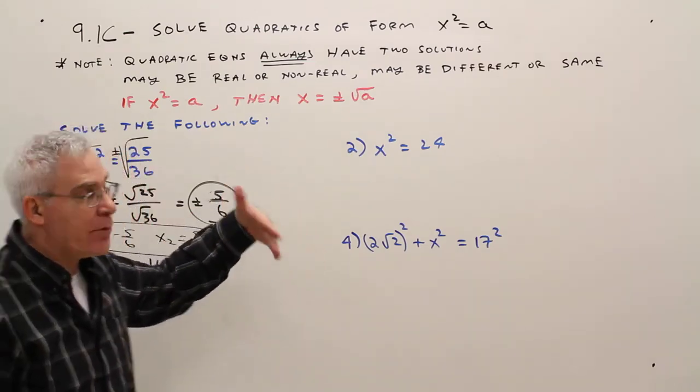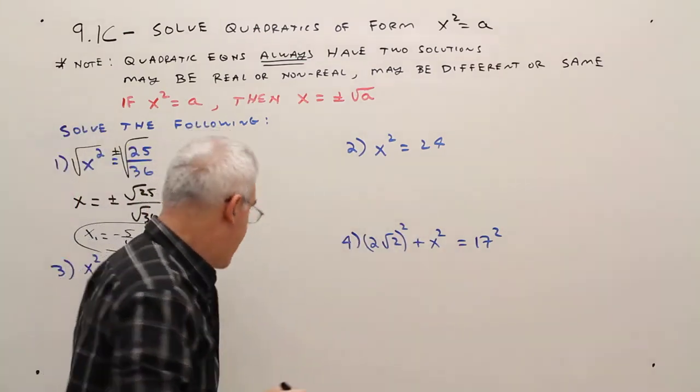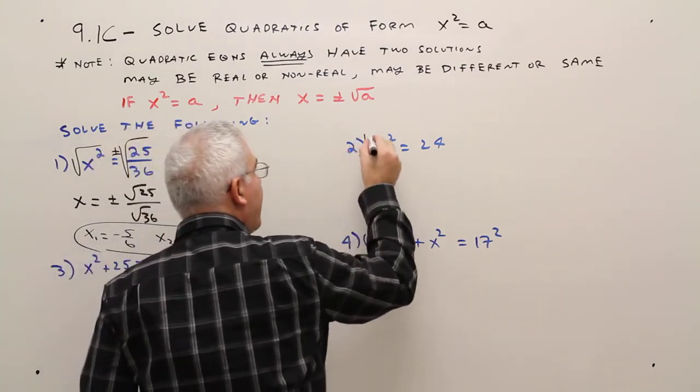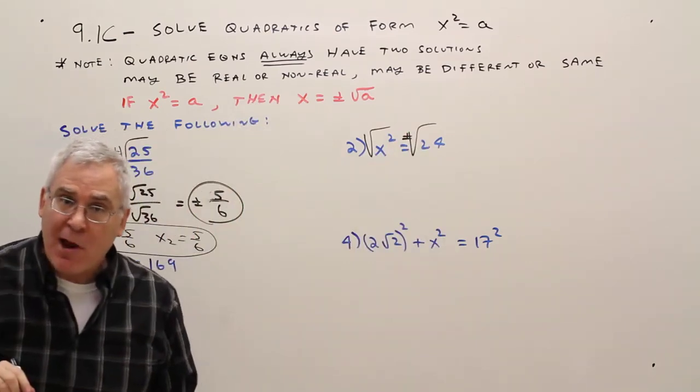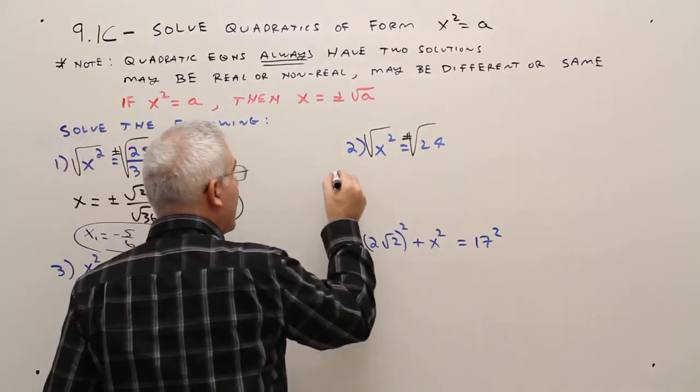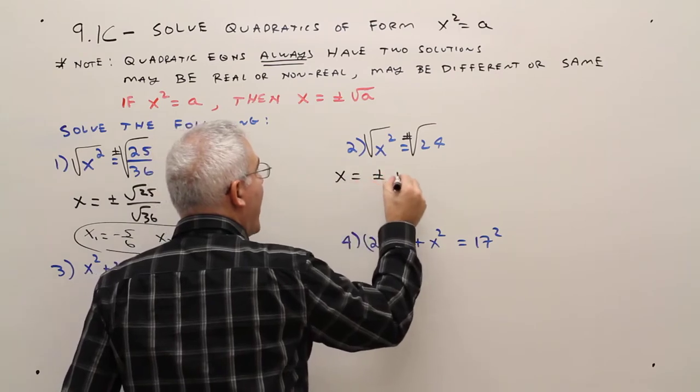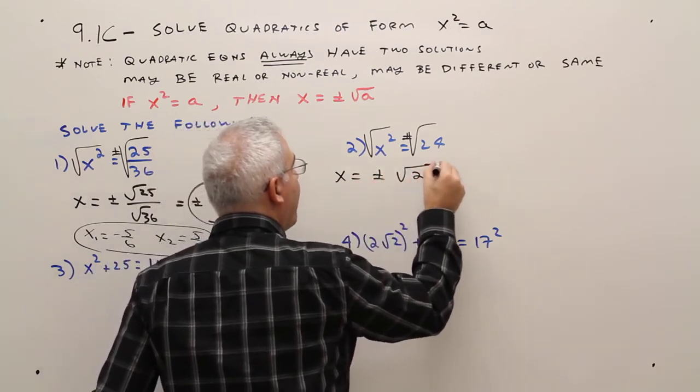Problem 2: Same thing. I'm going to take the square root of the left side and plus or minus the square root of the right side. So I'll get X equals plus or minus the square root of 24.